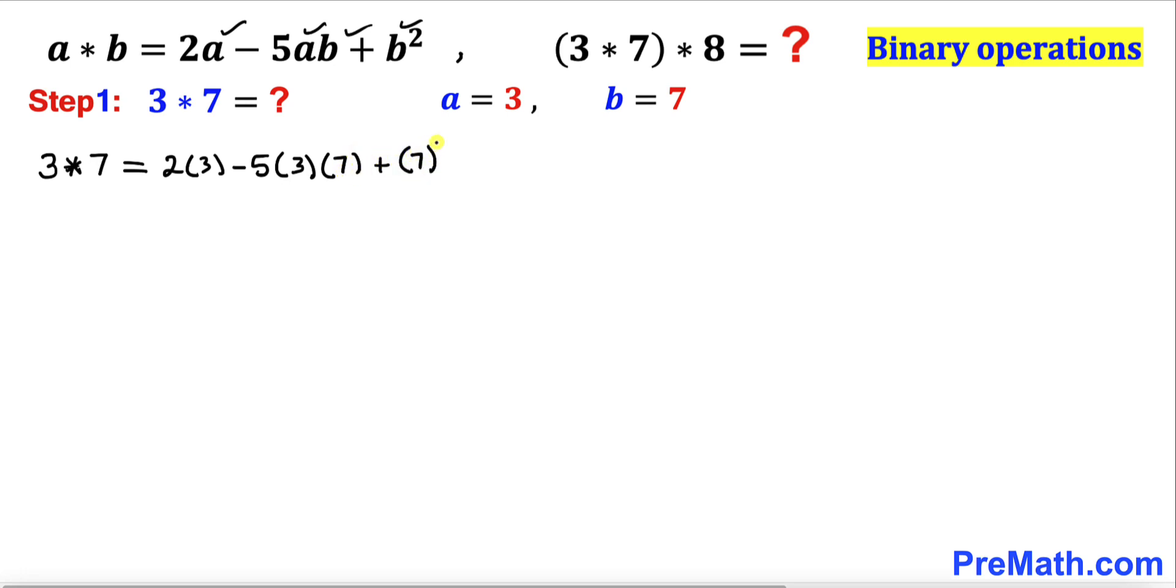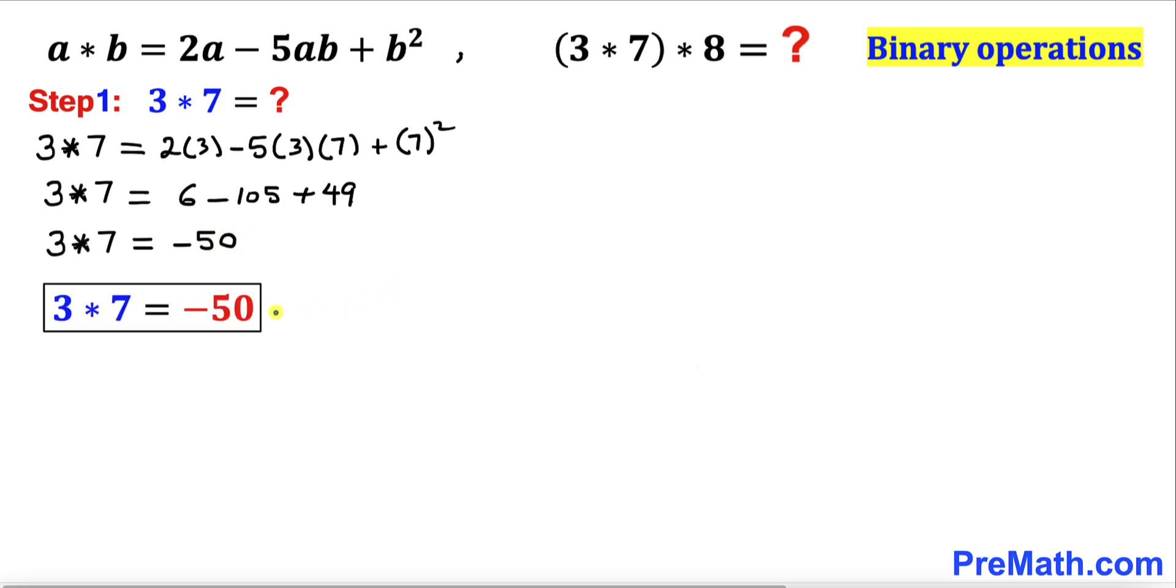And if we simplify the right hand side, that is going to give us 6 minus 105 plus 49. And if we add and subtract everything, that is going to give us negative 50. So that's our 3 star 7 value, turns out to be negative 50.